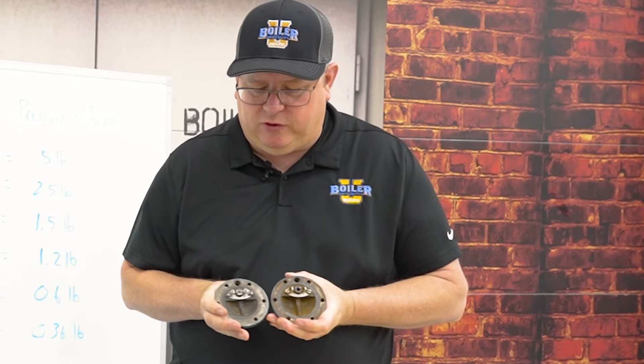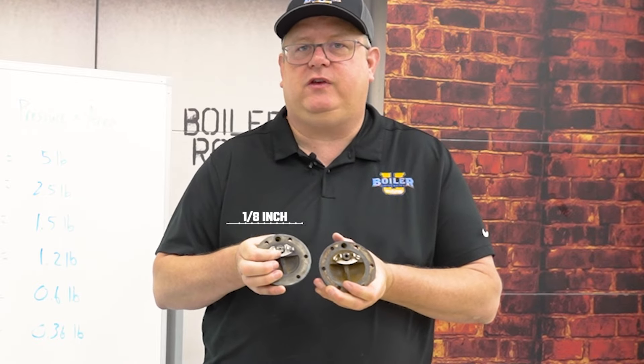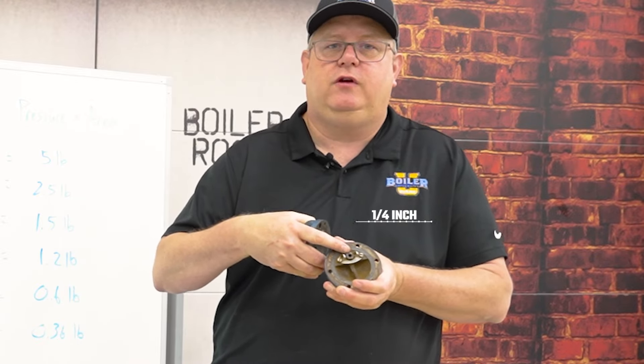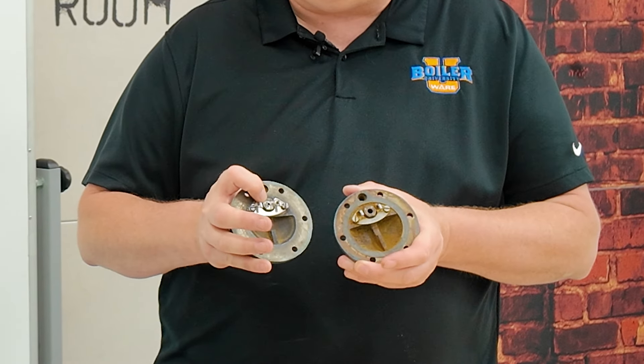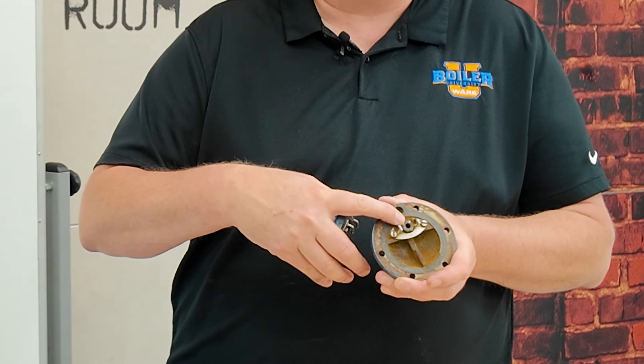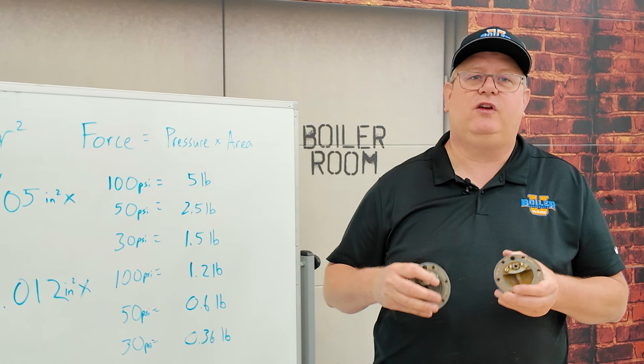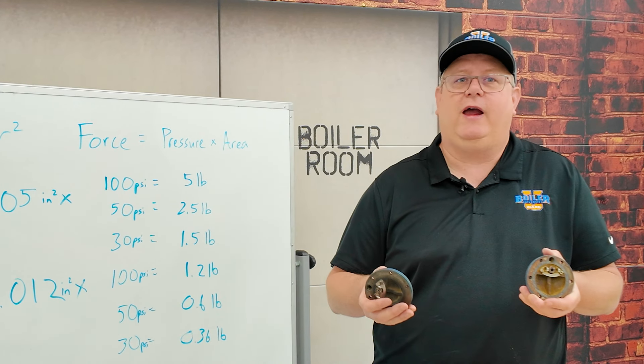If I look at two inverted bucket traps, one has an internal orifice that's an eighth inch, one is a quarter inch. We get more capacity the larger the orifice, but we have to worry about the pressure we're operating at and the force that's applied. Because the larger the seat, the more force — when the trap is closed — holding it shut. And that actually limits the functional range of a trap.